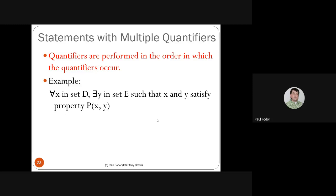In logic, quantifiers are performed in the order in which they occur. The sentence 'for all X in D, there exists Y in E such that P(X,Y)' means that for every element in D, we can find a different element in E such that P(X,Y) is true. The order of quantifiers matters.